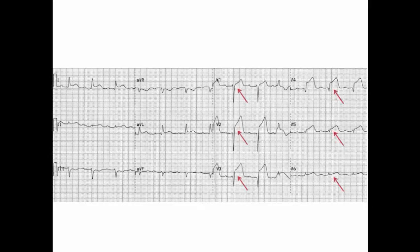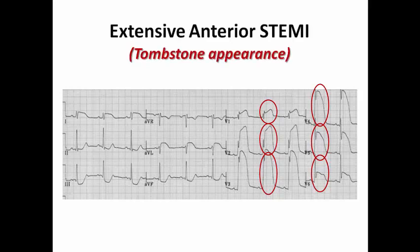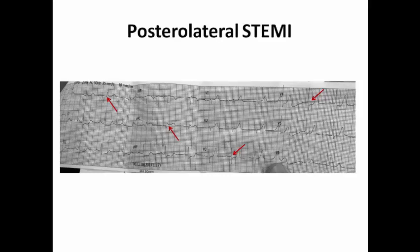In this ECG, ST elevation is present across the whole precordial leads and in aVL — extensive anterior STEMI. In another ECG, there is broad and marked ST elevation where the ST segment magnitude surpasses the amplitude of the R wave — this is the tombstone appearance, indicating extensive anterior STEMI with very high risk of mortality. In another example, ST elevation in aVL with reciprocal depression in inferior leads, plus ST depression with dominant R wave in V3 and V4, is suggestive of posterior MI — this is posterolateral STEMI.